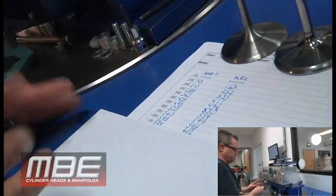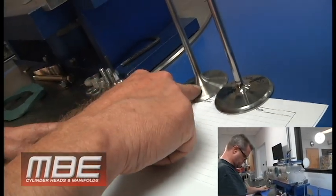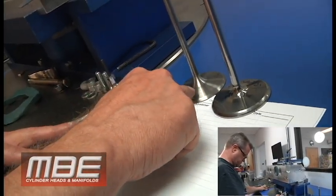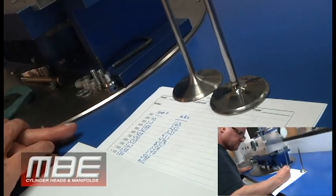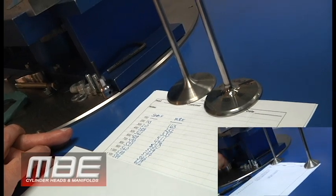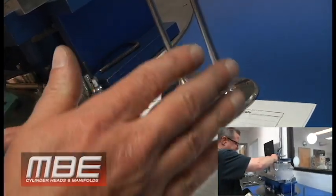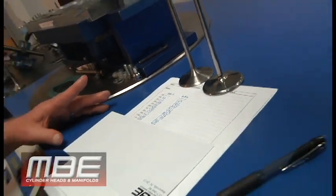If you go run these two on the dyno, this valve is probably going to make about 70 foot-pounds less torque, let's say in a 632 or something like that. It's going to be down over 100 in horsepower and it's not going to accelerate, it's not going to get out of its own way.